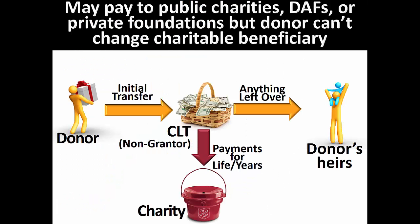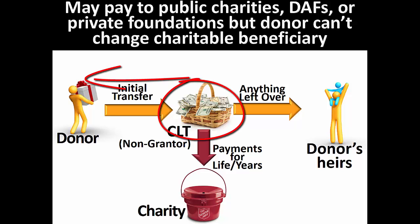In charitable remainder trusts, it is quite common for the donor to retain the right to change the charitable beneficiary of the trust. So long as the trust requires that some charity will ultimately receive the funds, this retention of power creates no problems. In contrast, if the donor retains this power in a non-grantor charitable lead trust, the gift and estate tax advantages of the trust will be lost. Retaining the power to change the charitable beneficiaries causes the assets to remain in the donor's estate and still subject to estate taxes at the donor's death. This same reality does not create tax problems for the charitable remainder trust, because when those assets are all transferred to charity at death, they are not subject to estate taxation due to the unlimited charitable estate tax deduction.